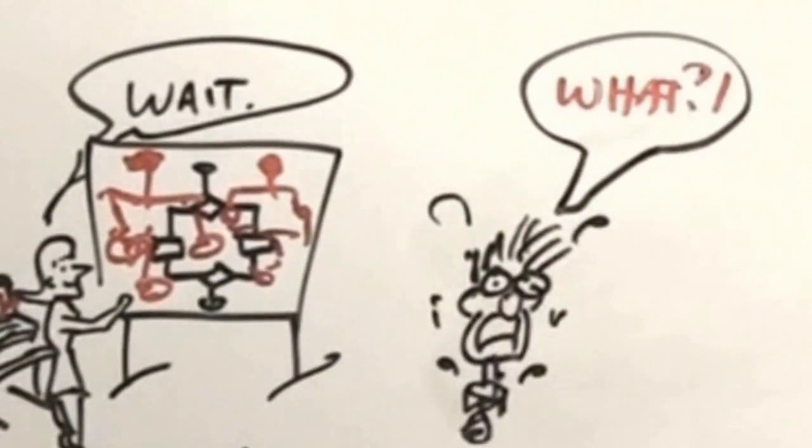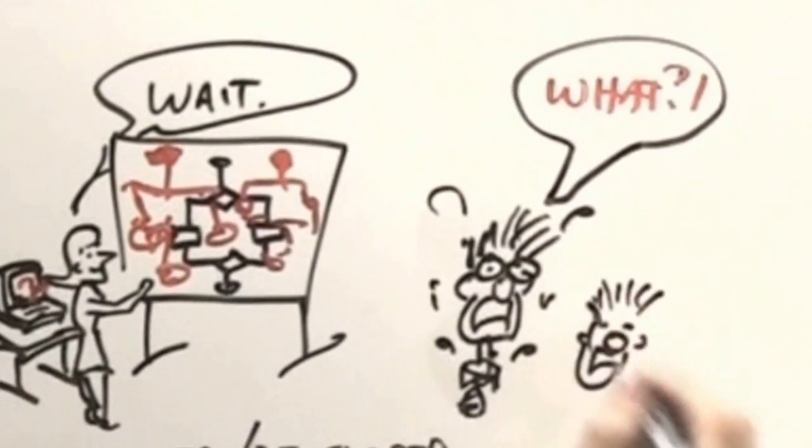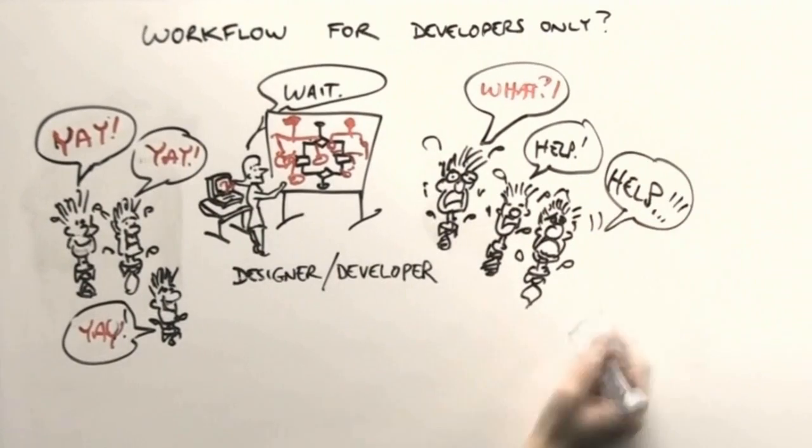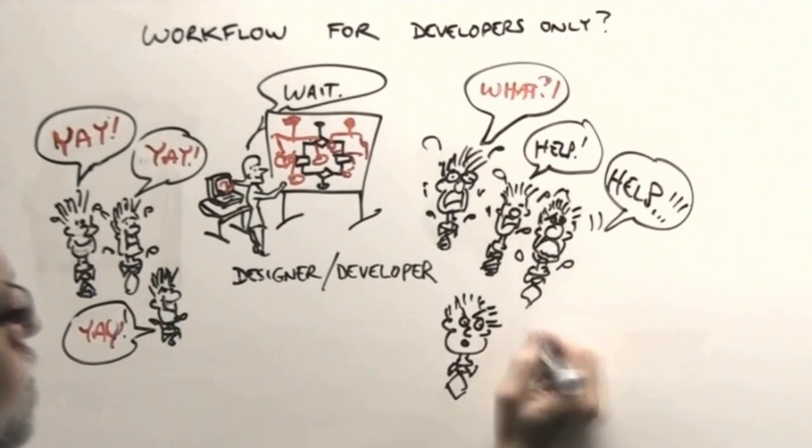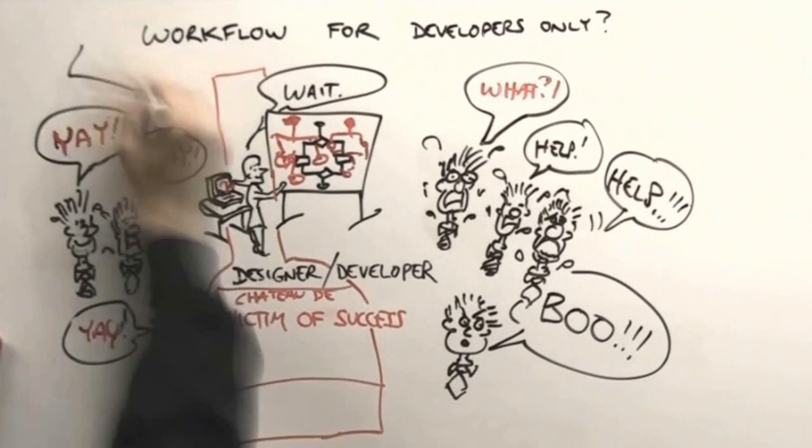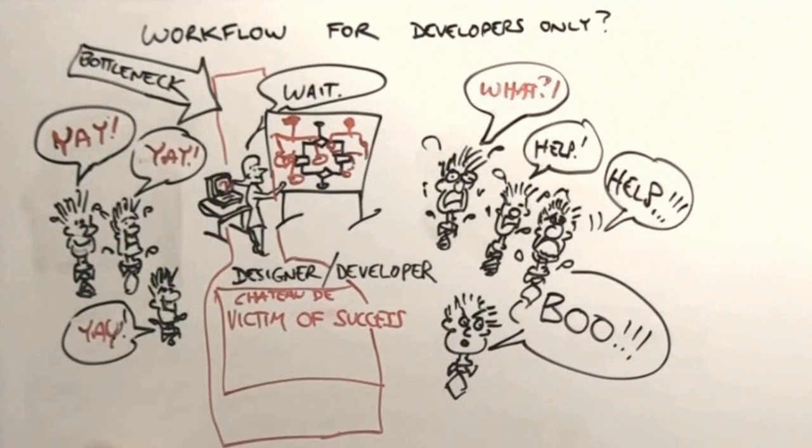You can imagine what the reaction will be when faced with that. You can also imagine what the succession of reactions will be as more and more people have to wait. There's an eventual revolt and developers become victims of their own success, and your crew of developers effectively become a bottleneck.